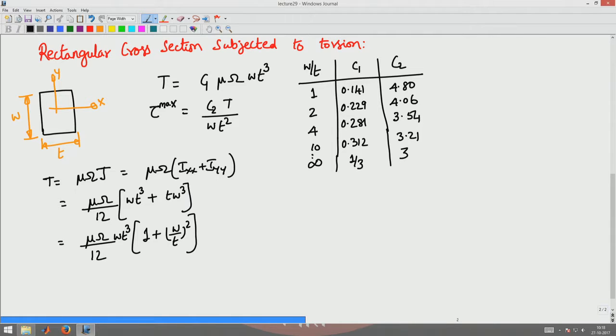Let's see what happens when w by t is 1. It will be 1 by 6. This is the torque expression when w by t equals 1. From this expression we will get C1 as 1 by 6 which is 0.166.